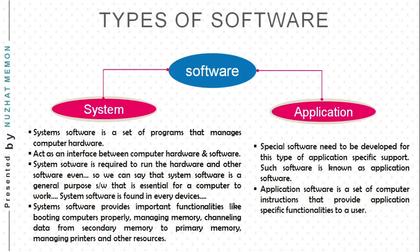Now let's look at application software. Application software is used by the end user and is specific in its functionality — it does the job it was designed to do. For example, MS PowerPoint is used specifically for making presentations. Tally is designed for accounting. Amazon supports online shopping. Such special-purpose software providing application-specific functionalities to a user is known as application software.